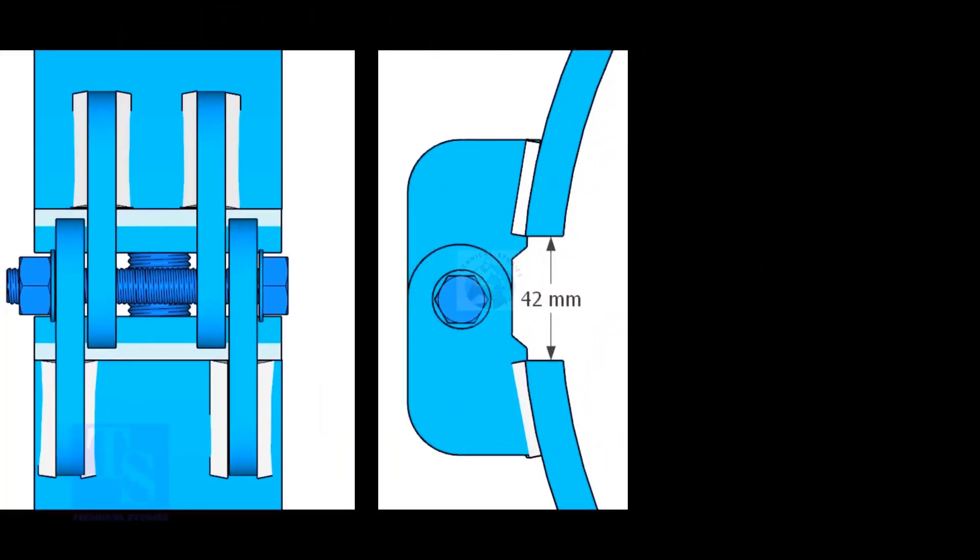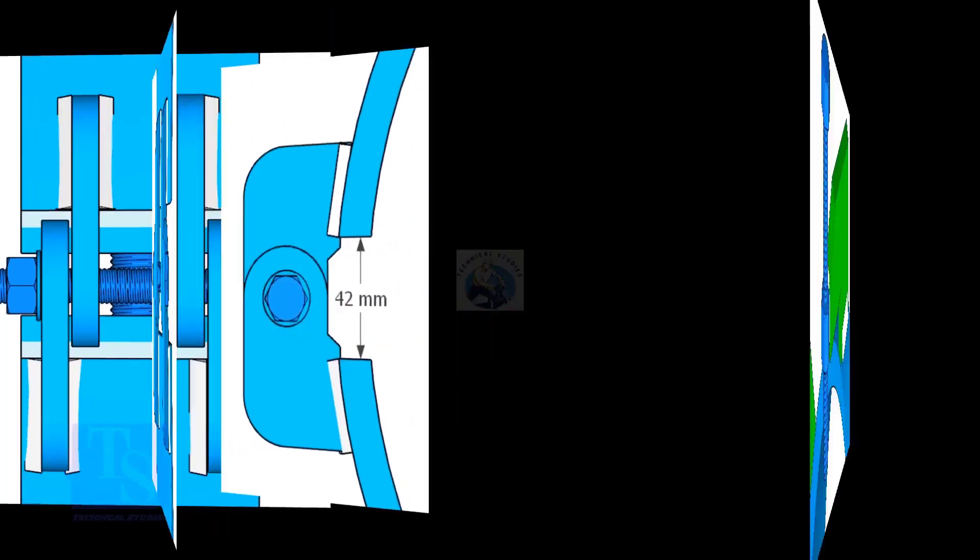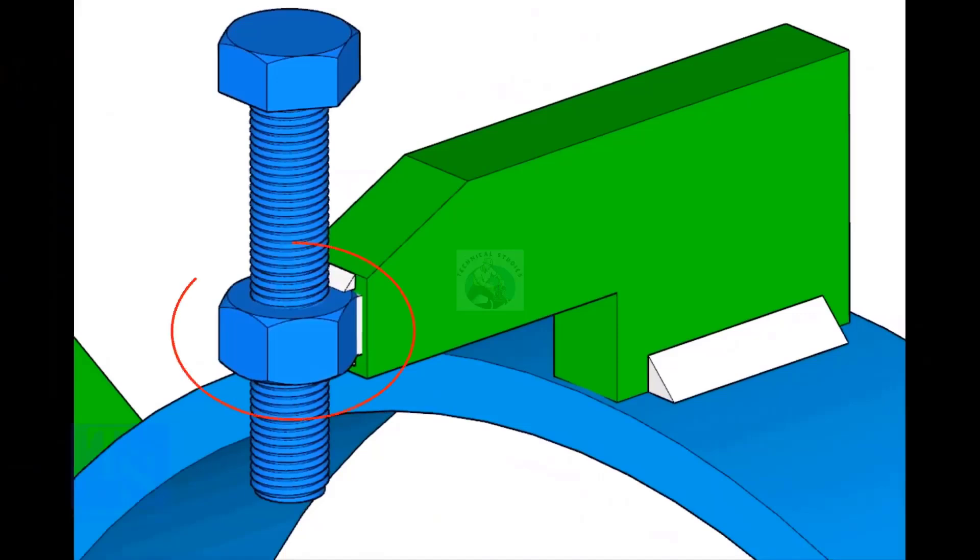Weld the hinges as shown in the drawing or video. A 5-millimeter fillet weld is sufficient. The gap shown is not critical; it depends on the thickness of the clamp. The nut shall be welded to the L-clamp all around. This welding shall be a minimum of 5 millimeters on both sides.